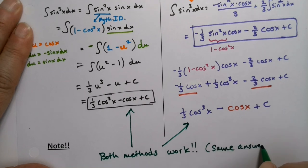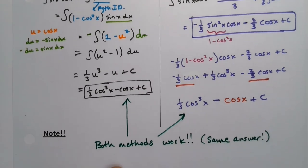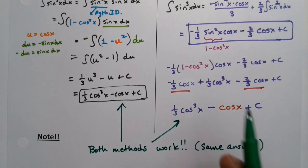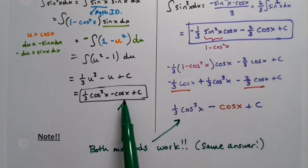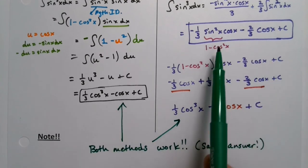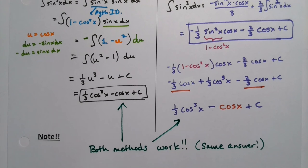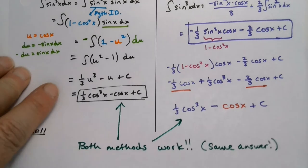The two answers - the one from the trig strategy and the one from the reduction formula - don't look the same at first, but if you manipulate them they are equivalent. The reduction formulas, if you're allowed to use them, are wonderful because they get you out of having to do all sorts of heavy lifting. So let's use the reduction formula again, but now for tangent.